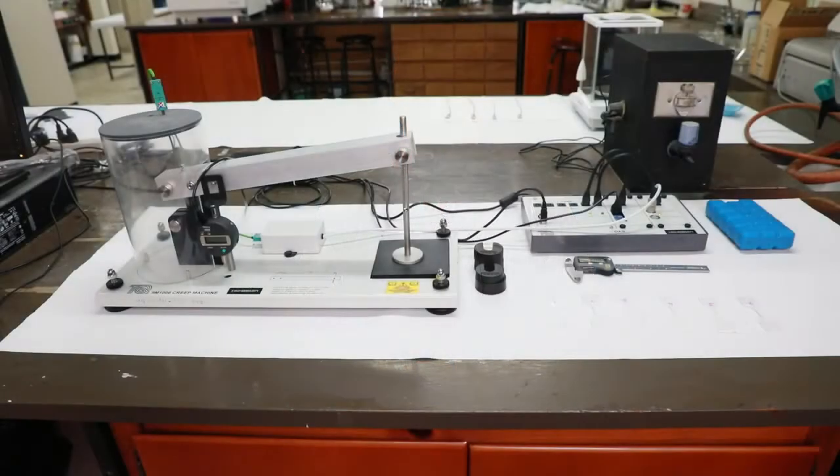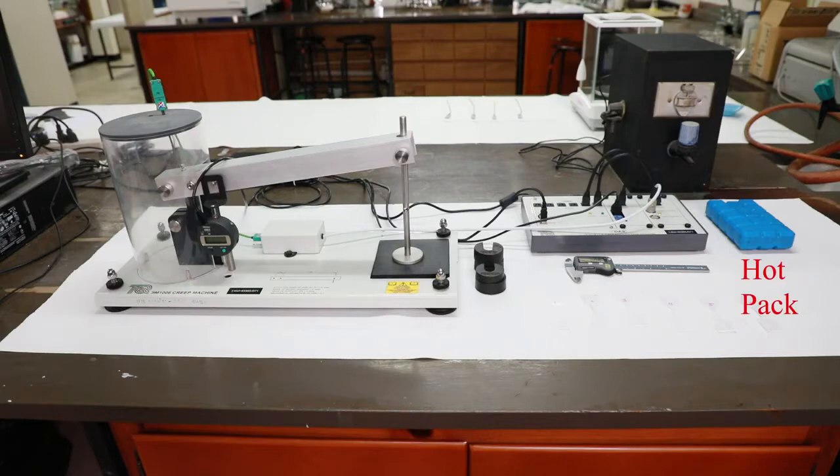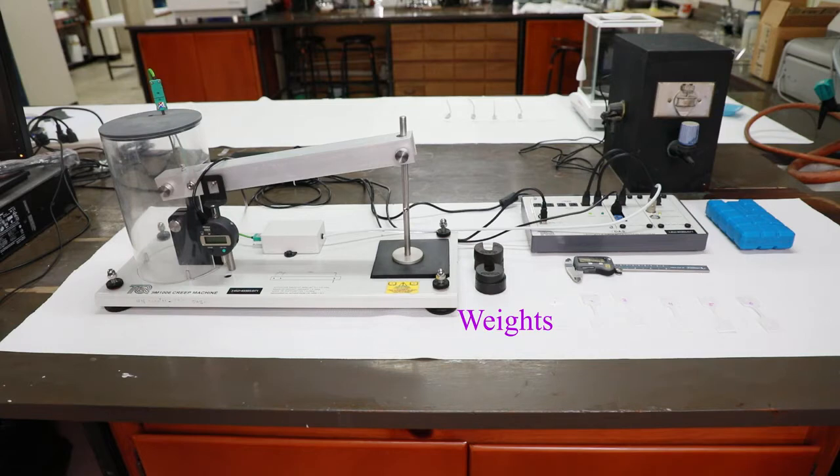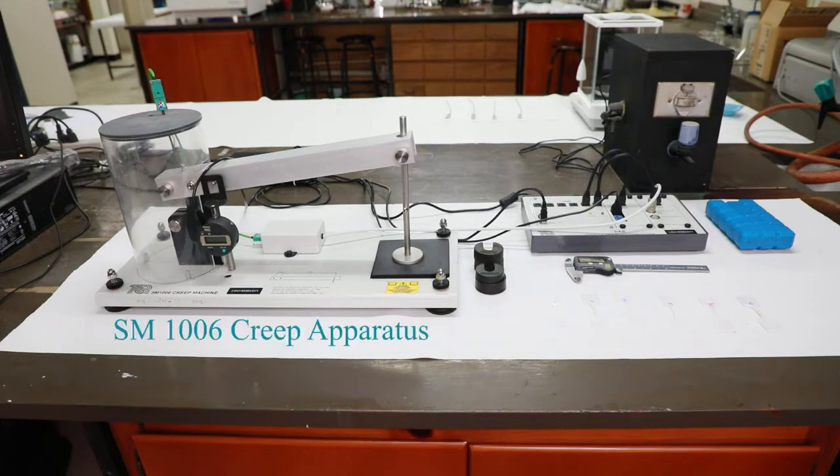We will be using six polypropylene strips, a vernier caliper, hot pack and cold pack, thermometer, 0.5 kg and 0.6 kg weights, water bath, computer and SM1006 creep measurement apparatus.